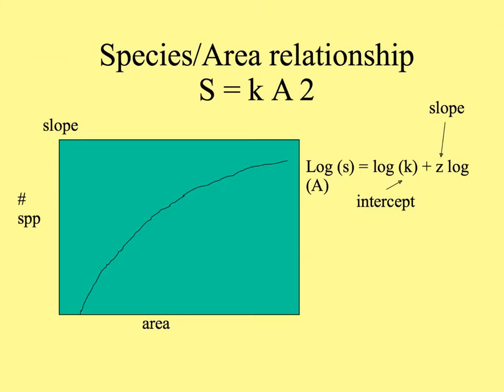There's also the species-area relationship. In general, the bigger the area of the habitat, the more species you encounter. This relationship increases as a square of the area, and in the log of the species-area relation, the log of species equals the log of K — which is the intercept — plus the log of Z — which is the slope of this curve.